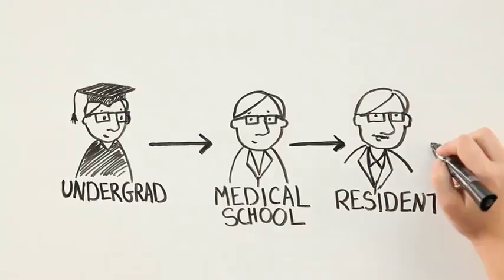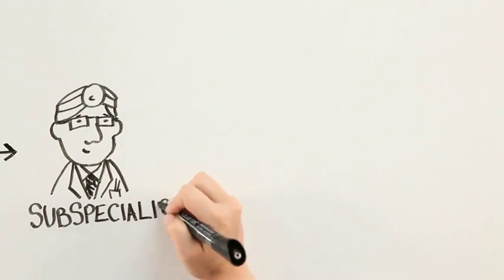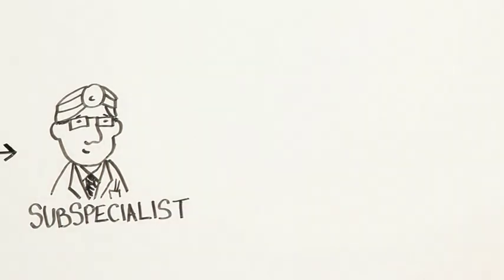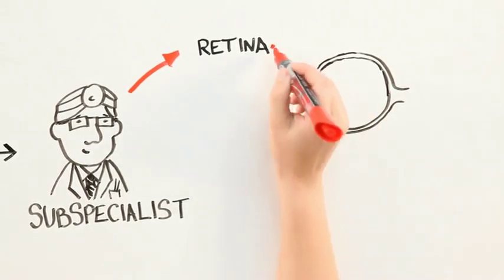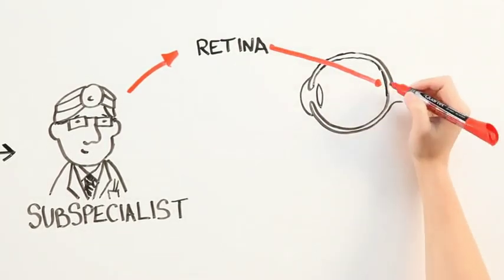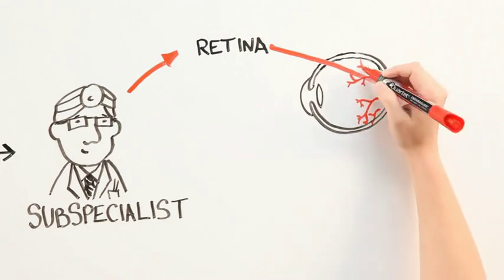After doing a residency, you can even subspecialize in a specific area of the eye. For instance, I did two extra years of training to become a retina specialist. So now I really only see patients with retinal problems and treat vision-threatening conditions like macular degeneration and diabetic retinopathy.